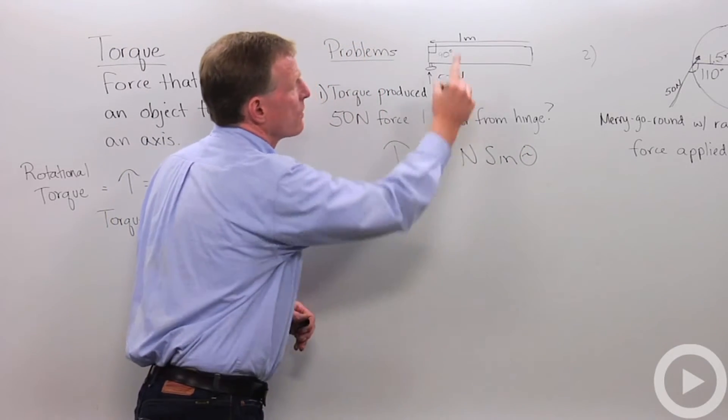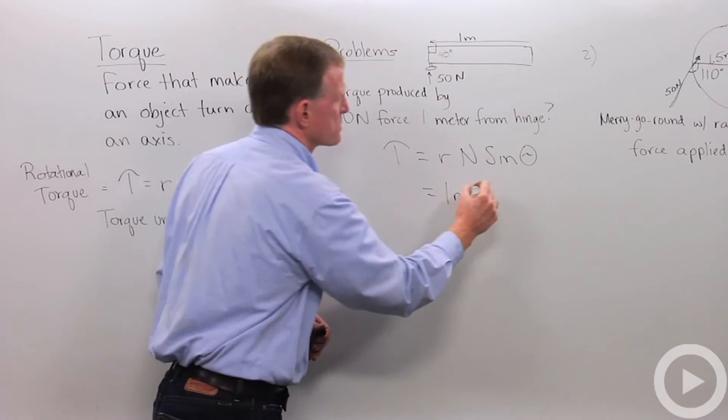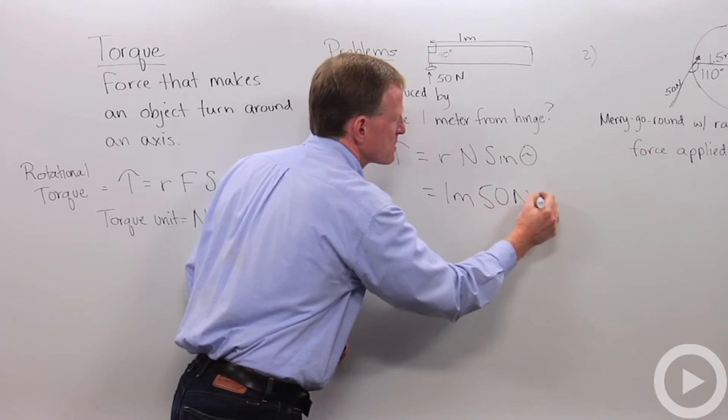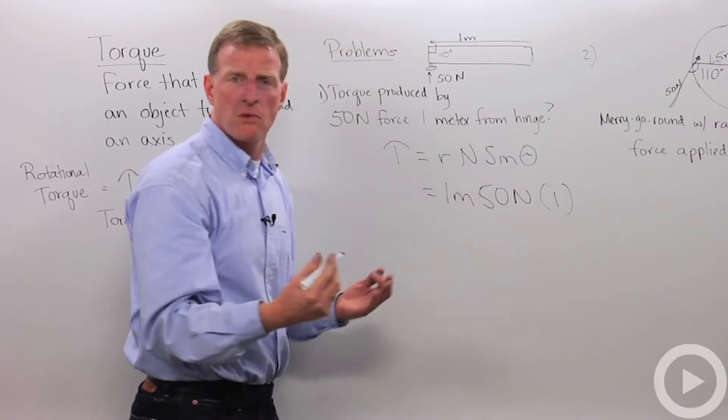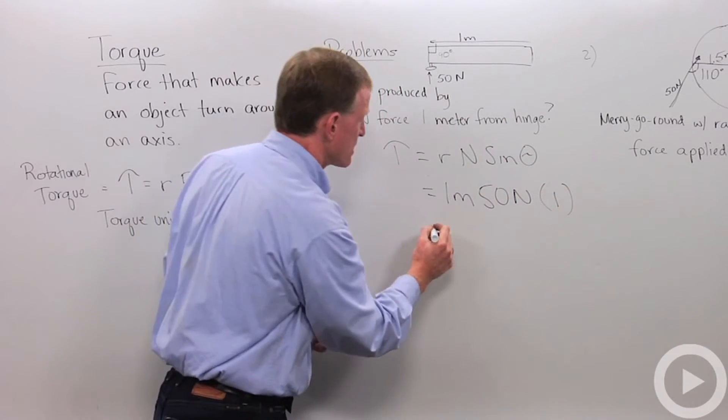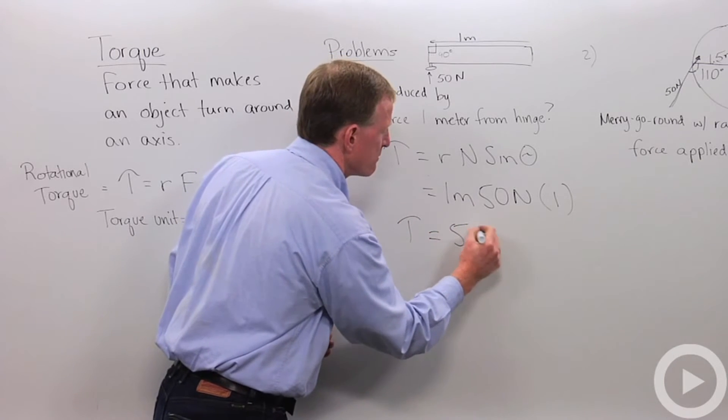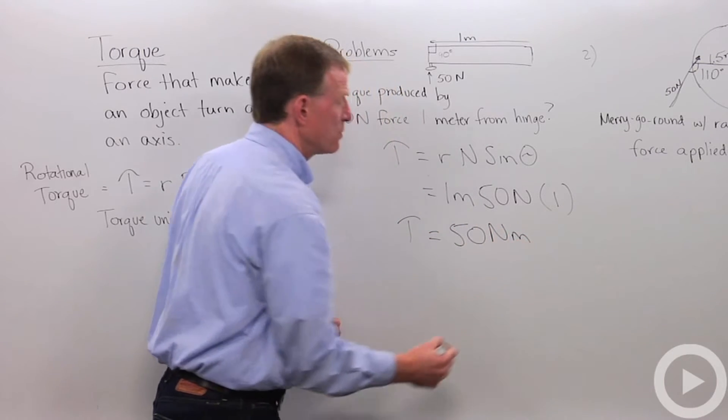I'll just plug those in. I've got 1 meter times 50 newtons, and the sine of 90 degrees is 1. Now if I solve that, I just get my torque is 50 newton meters.